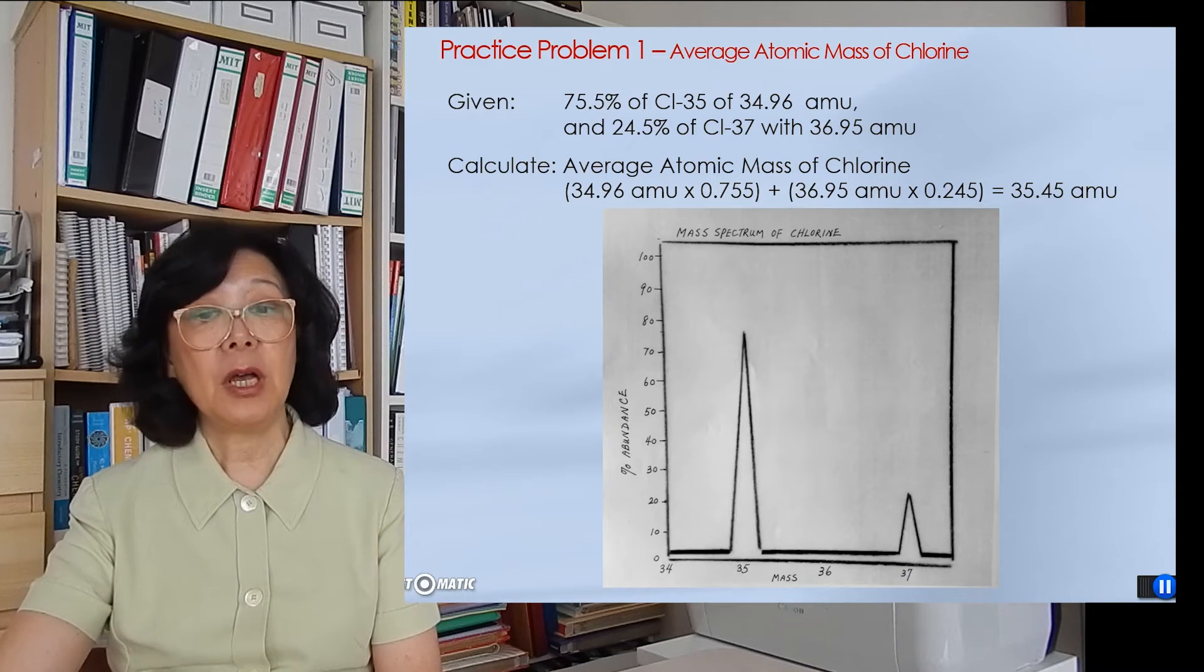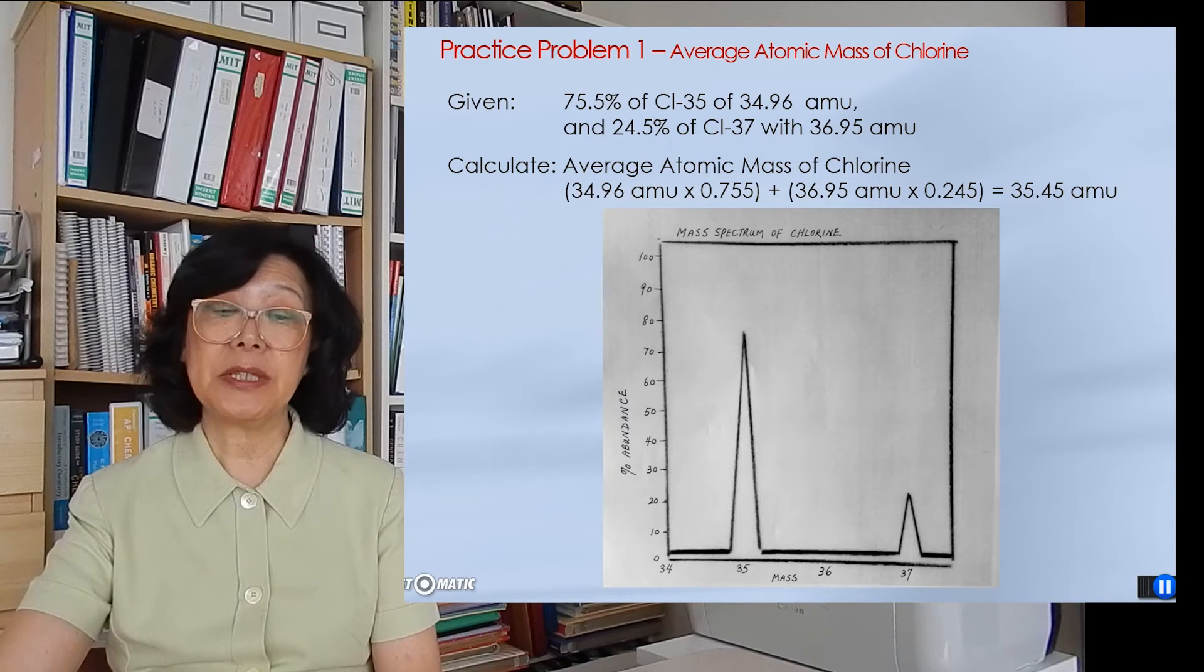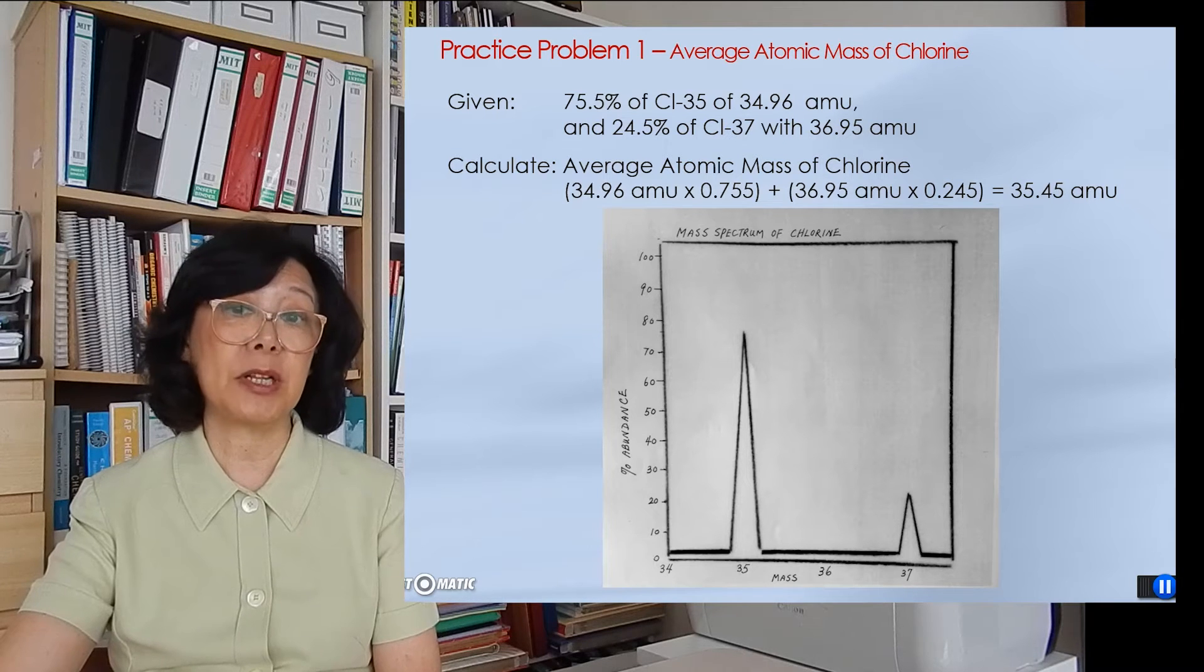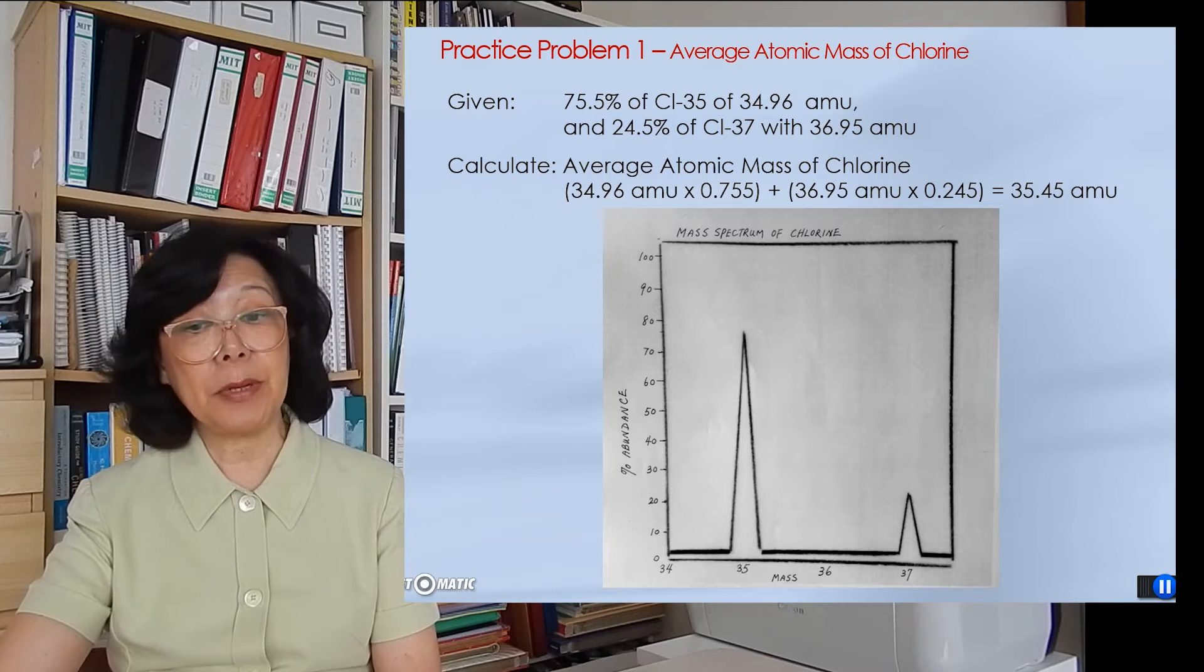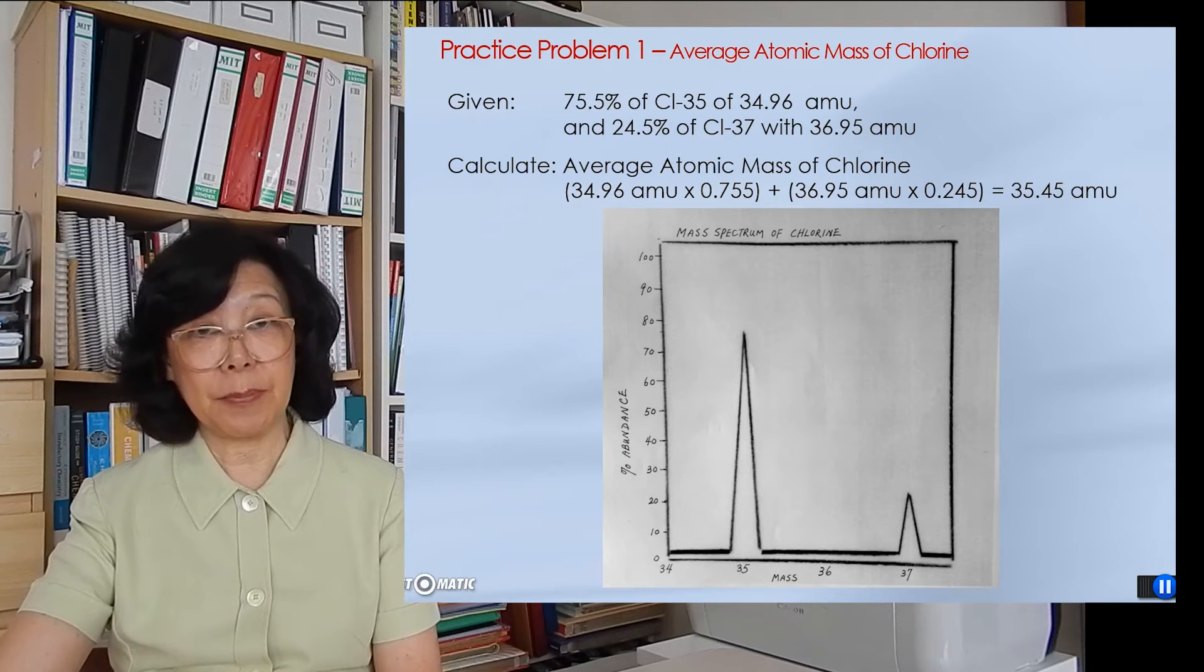And here's the spectrum of Cl. The left peak being taller, representing Cl-35 with 75.5% relative abundance. And the right peak representing Cl-37 with 24.5% relative abundance.